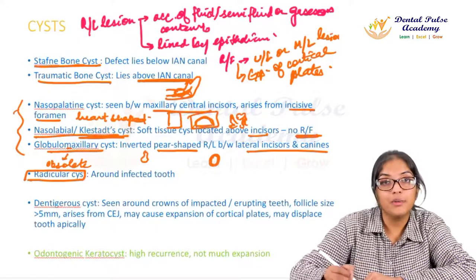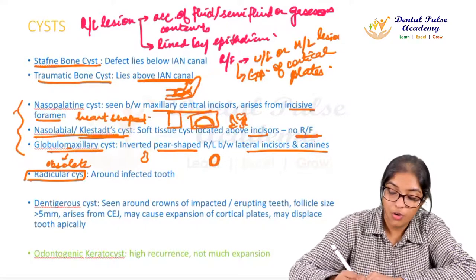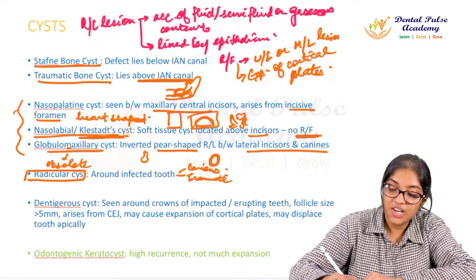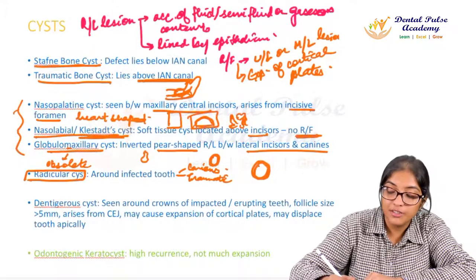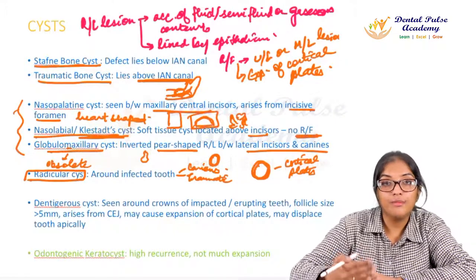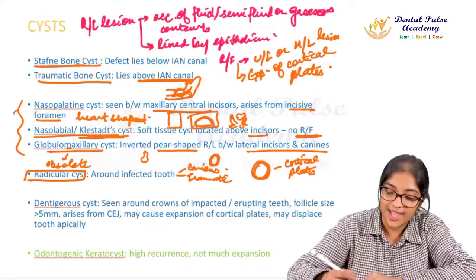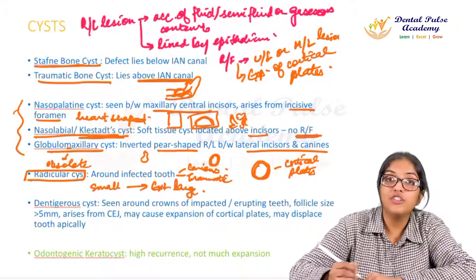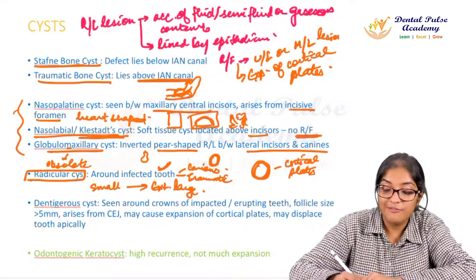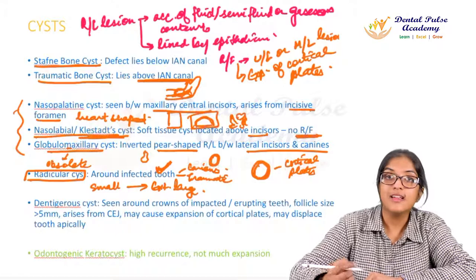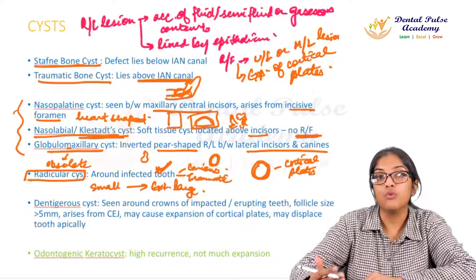Radicular cyst is the most common type of cyst, seen around an infected tooth — the tooth will have a carious lesion involving the pulp or a history of trauma. It appears as a radiolucency around the apex of the infected tooth and may show cortical expansion, breach of buccal/lingual cortical plates, or extension into the sinus, ranging from very small to extremely large. Identify the epicenter near an infected tooth for diagnosis.